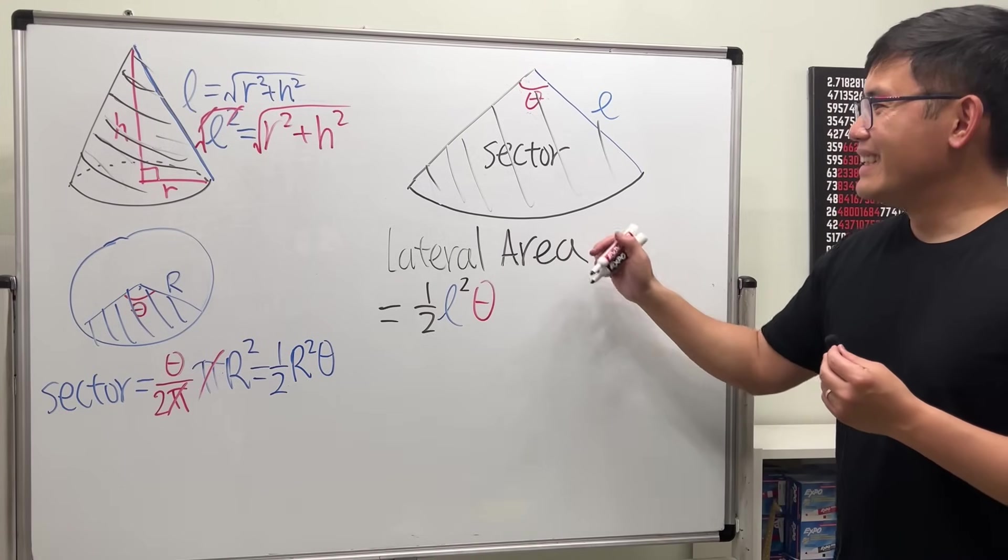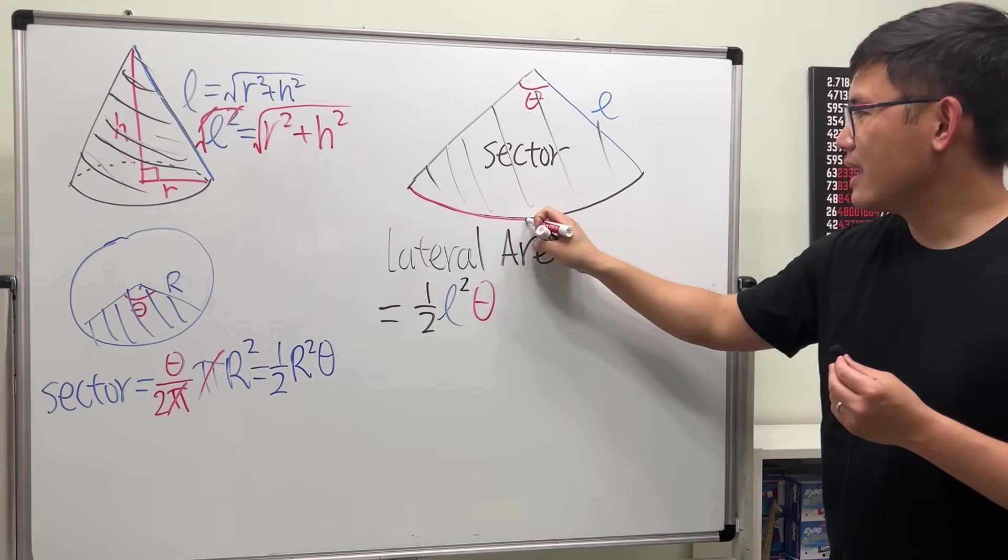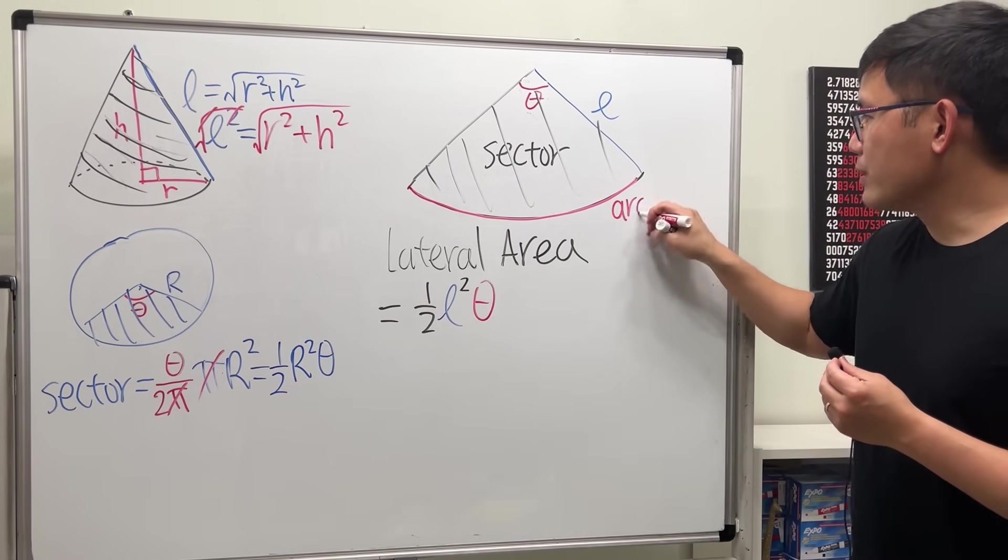The way to do it is, in fact, we can look at this arc. Alright, this is an arc. And I will tell you guys that, if we have a circle and we look at a circular arc,